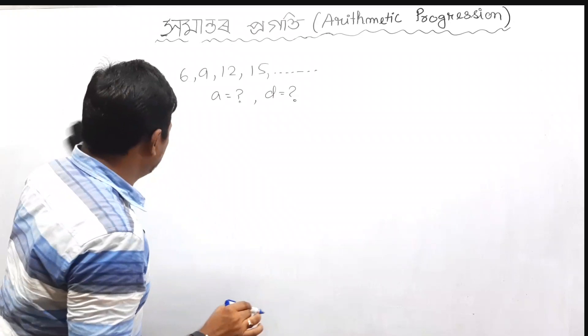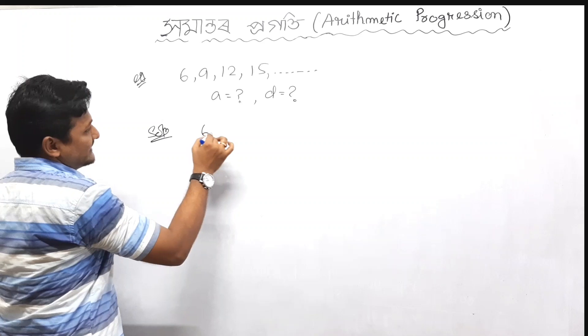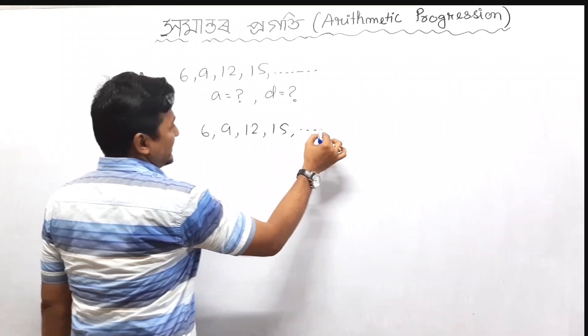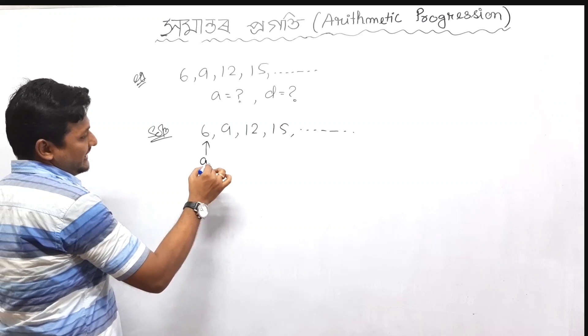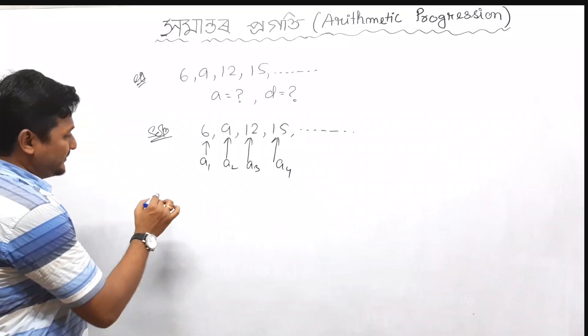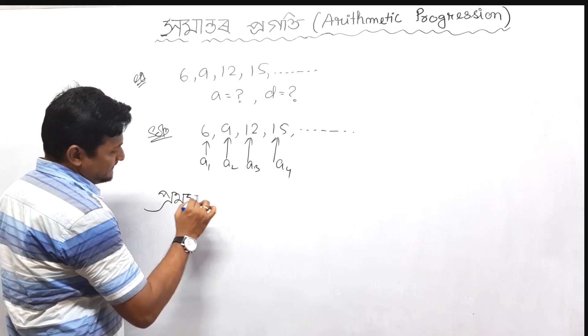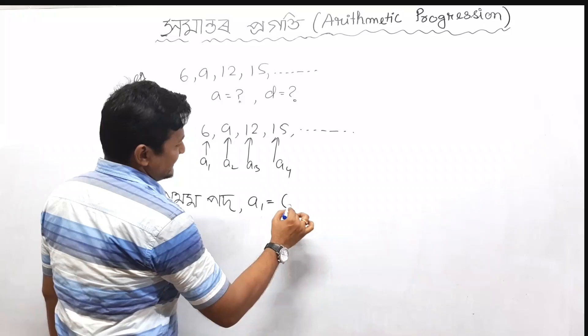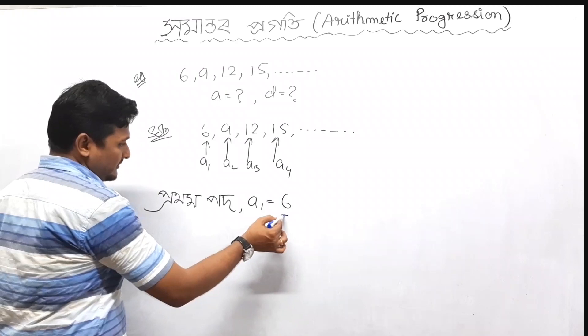This will be pretty easy. This is a solution for you. The sequence: 6, 9, 12, 15, and so on. This is a solution for you. A1, A2, A3, A4, A1, A6. A2, A6.